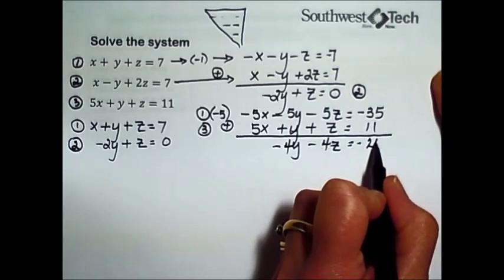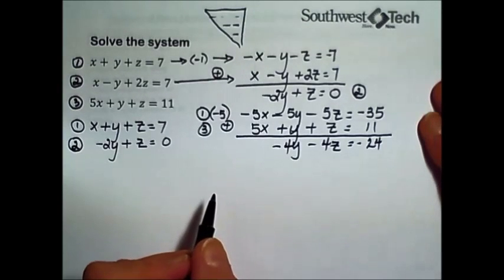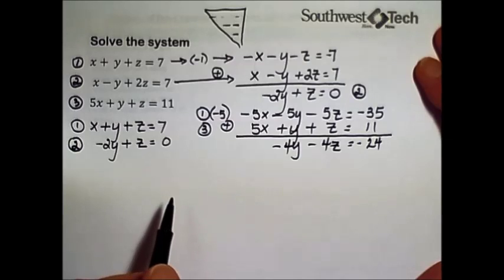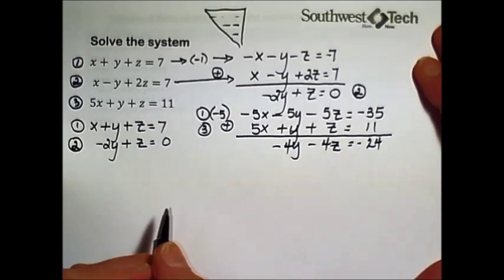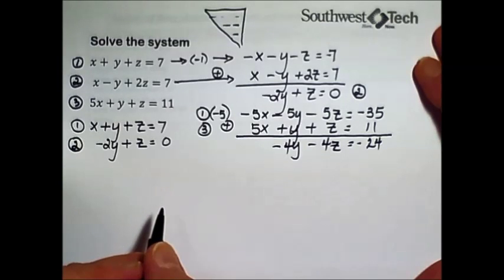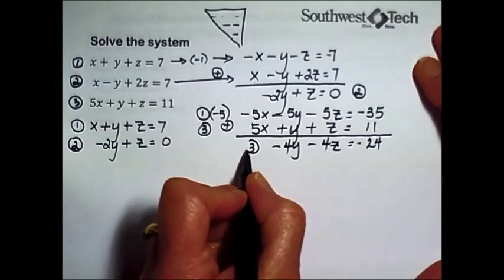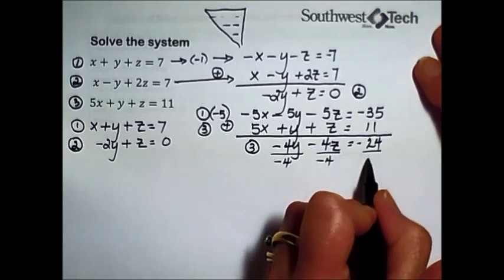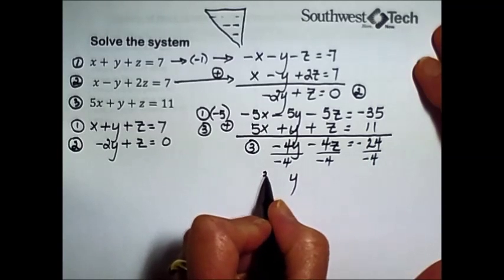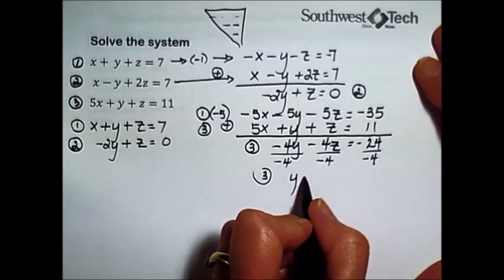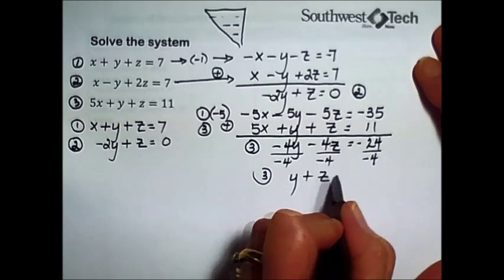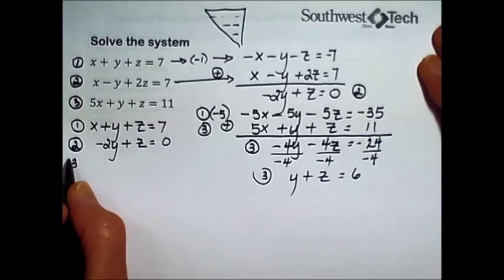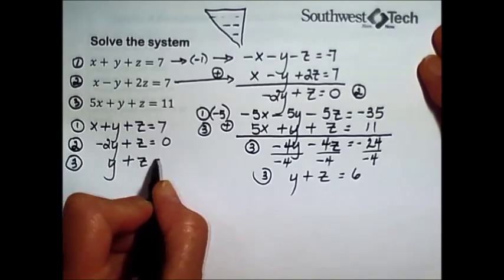I should make mention that any time you get a result and you can reduce that, go ahead and do so. Since there's a common four to each one of the terms, and all three of them are negative, I propose an alteration to my new equation number three. I'm going to divide every term by negative four. The negatives will cancel out leaving y, the negatives will cancel out leaving z, the negatives will cancel out and twenty-four divided by four leaves us with six. Here's our new lean trim equation number three.